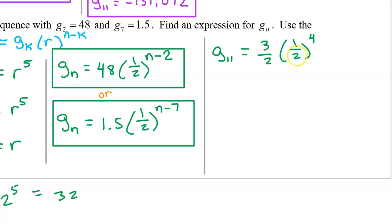So 1 half to the 4th power is 1 sixteenth. 1 to the 4th power is 1. And 2 to the 4th power is 16. So now we have g11 is equal to 3 halves times 1 over 16. This doesn't reduce. So I'm just going to multiply straight across. So g11 will equal 3 over 32. And that's it.